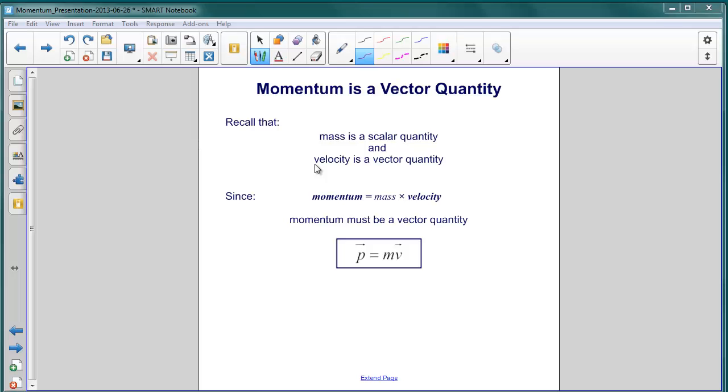One important quality of momentum is that it is a vector quantity. So let's begin by remembering the expression for momentum. It's p for momentum equals mass m times velocity v.